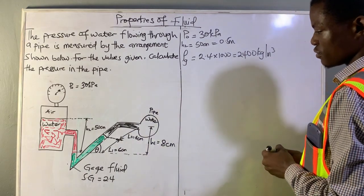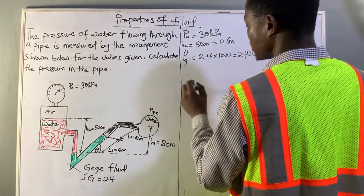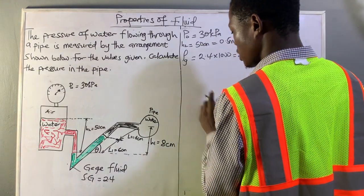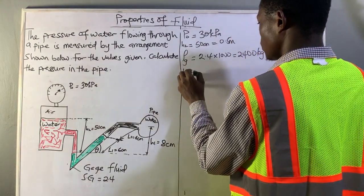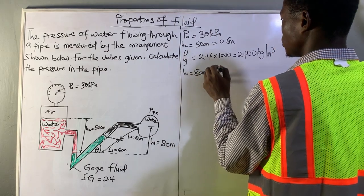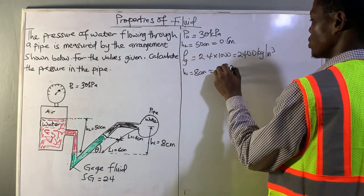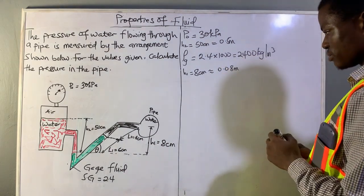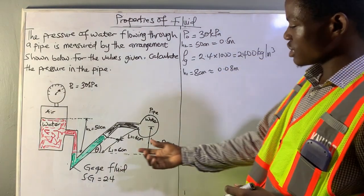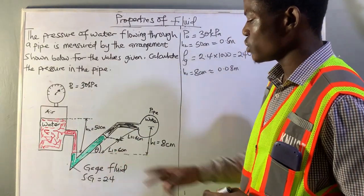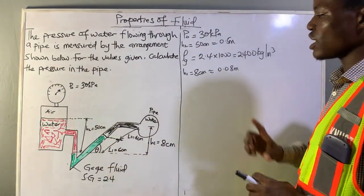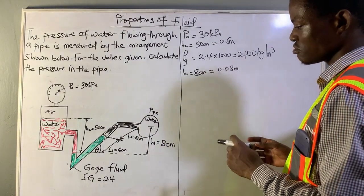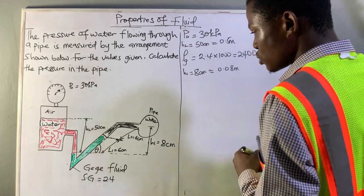We also have the height here, H1, and H1 is equal to 8 centimeters, which is also equivalent to 0.08 meters. Now, since it's inclined, we have an angle here, but we want the vertical height, not the diagonal length.